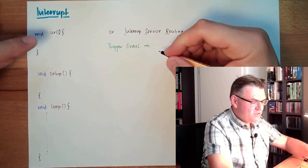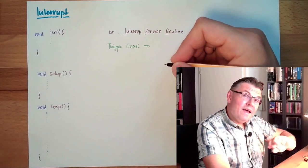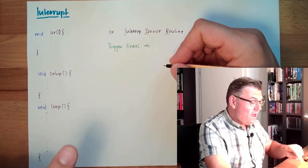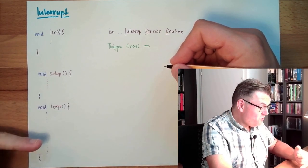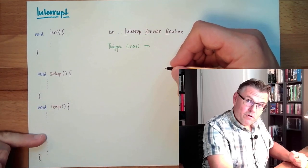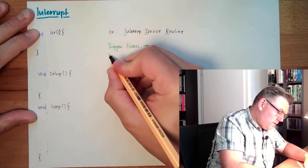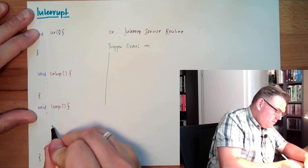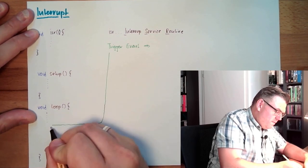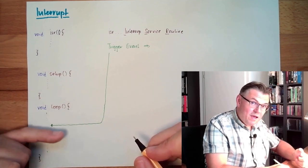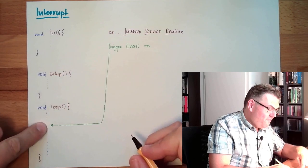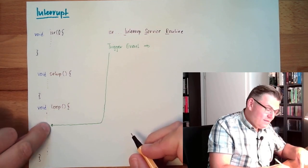This trigger event can occur any time, interrupt any time. Whenever this trigger event occurs, we interrupt, this is why this name is, the current program cycle. Let's say the trigger event happens here, somewhere here, does not really matter where, can be any time, at any code line.